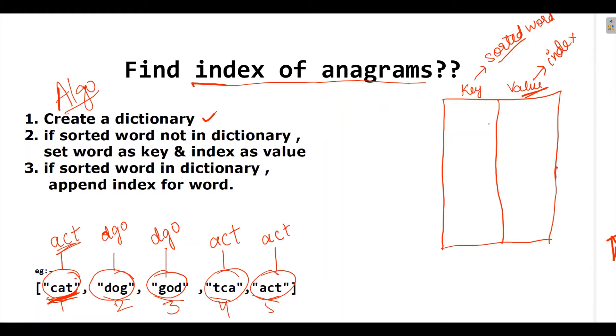So, here it is not in dictionary. So, I will set act in key and its value 1 and it should be in list form. Then comes second DGO.